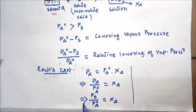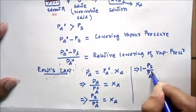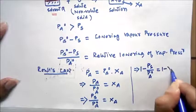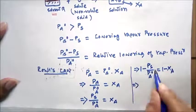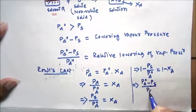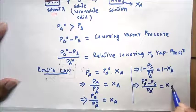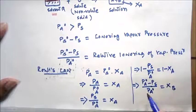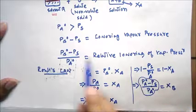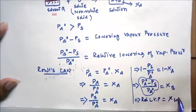If we subtract both sides from one, we get: 1 − (Ps / Pa0) = 1 − XA. This gives us (Pa0 − Ps) / Pa0 = 1 − XA. Since 1 minus the mole fraction of the solvent gives the mole fraction of the solute, we get (Pa0 − Ps) / Pa0 = XB. This term, (Pa0 − Ps) / Pa0, is called relative lowering of vapor pressure, and it equals the mole fraction of the solute.